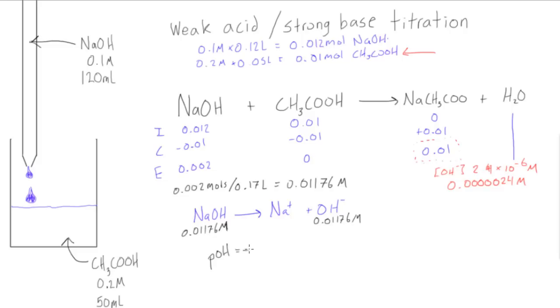So knowing that we can find pOH. We have pOH is going to be equal to the negative log of our OH concentration here which is 0.01176, and then the answer to this negative log of this value here, we're going to get 1.93.